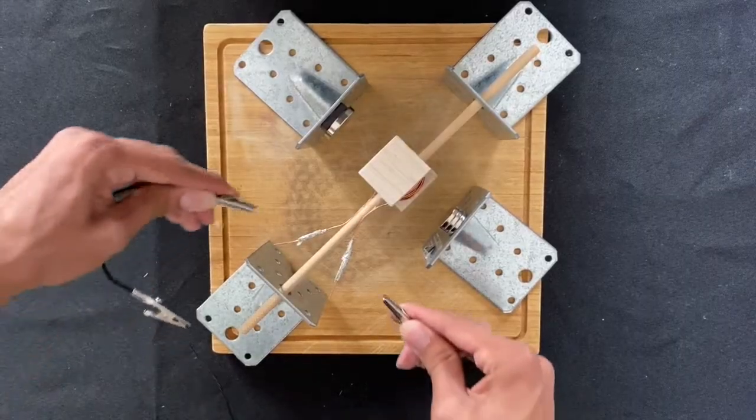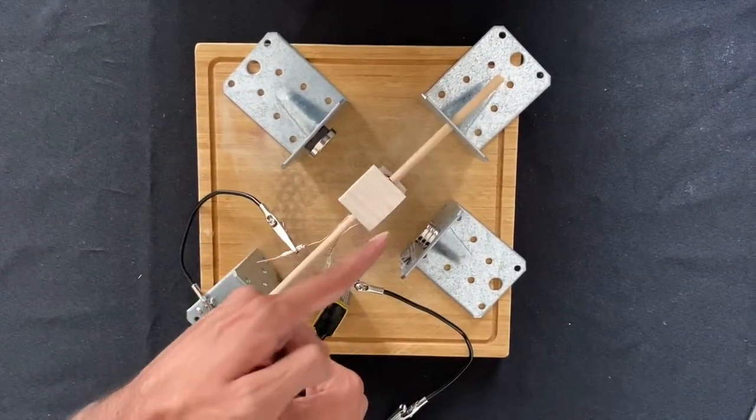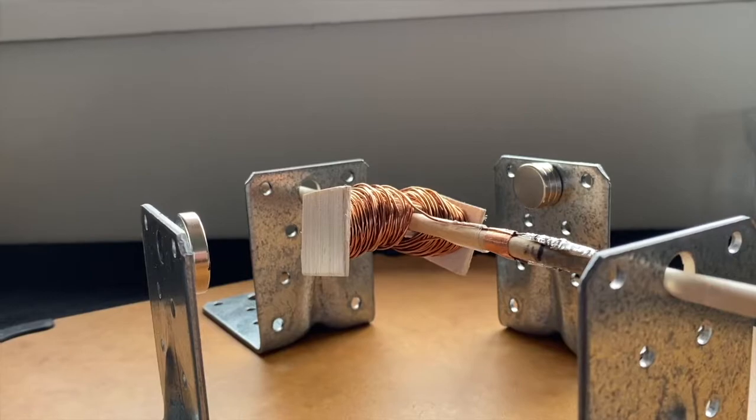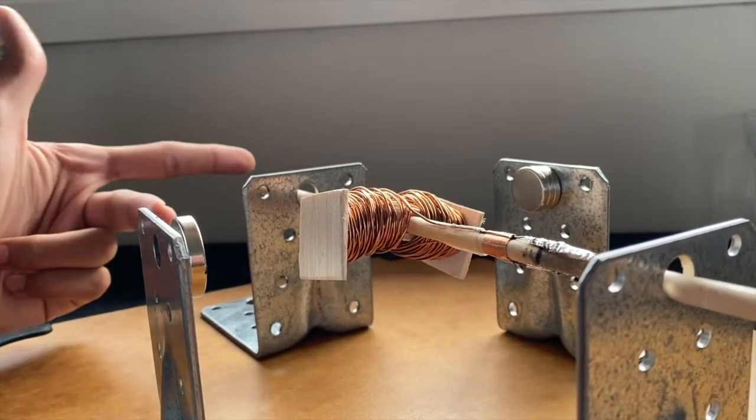Attach the battery to the coil, and a current will start to flow in this direction. According to Fleming's left-hand rule, a force should theoretically be produced on our armature in this direction, causing it to rotate. Let's see what happens.